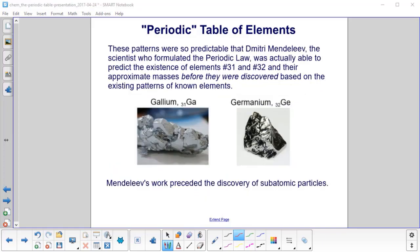These patterns were so predictable that Dmitri Mendeleev, the scientist who formulated the periodic law, was actually able to predict, and this is the essence of science, to come up with a theory and predict something. He predicted elements 31 and 32 and their approximate masses before they were discovered. He based this all on the patterns of known elements. And here they are, gallium 31 and germanium 32.